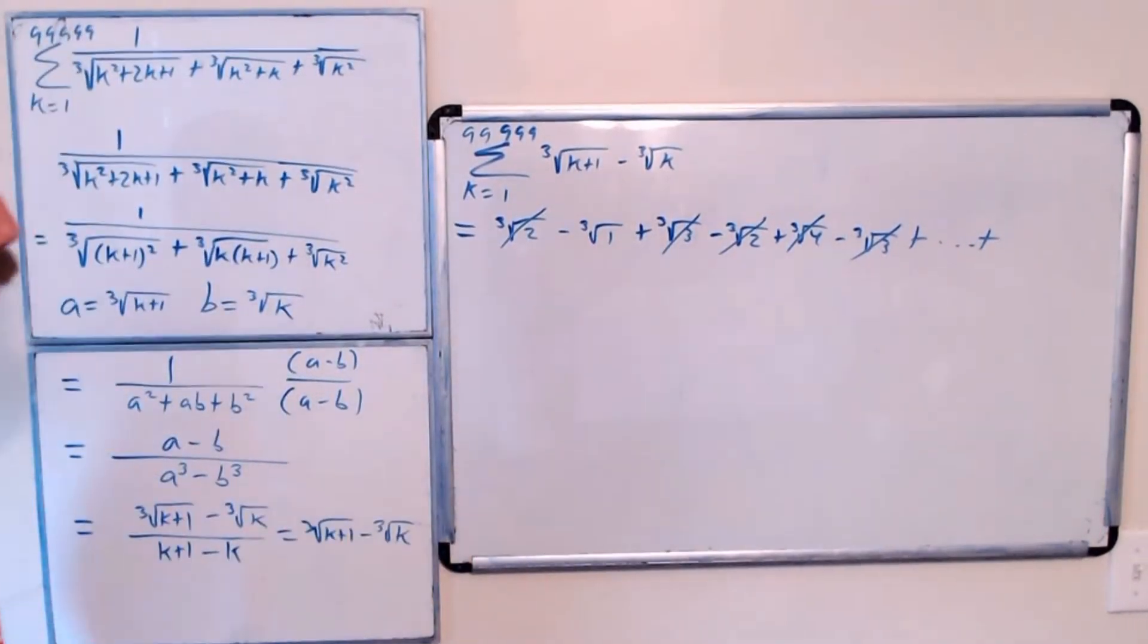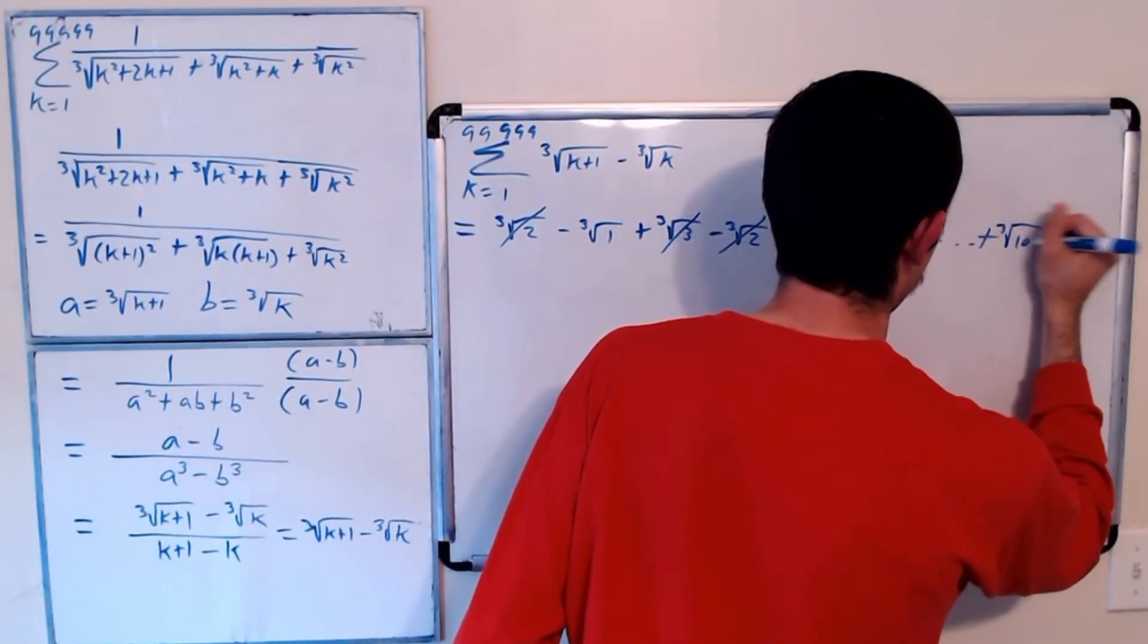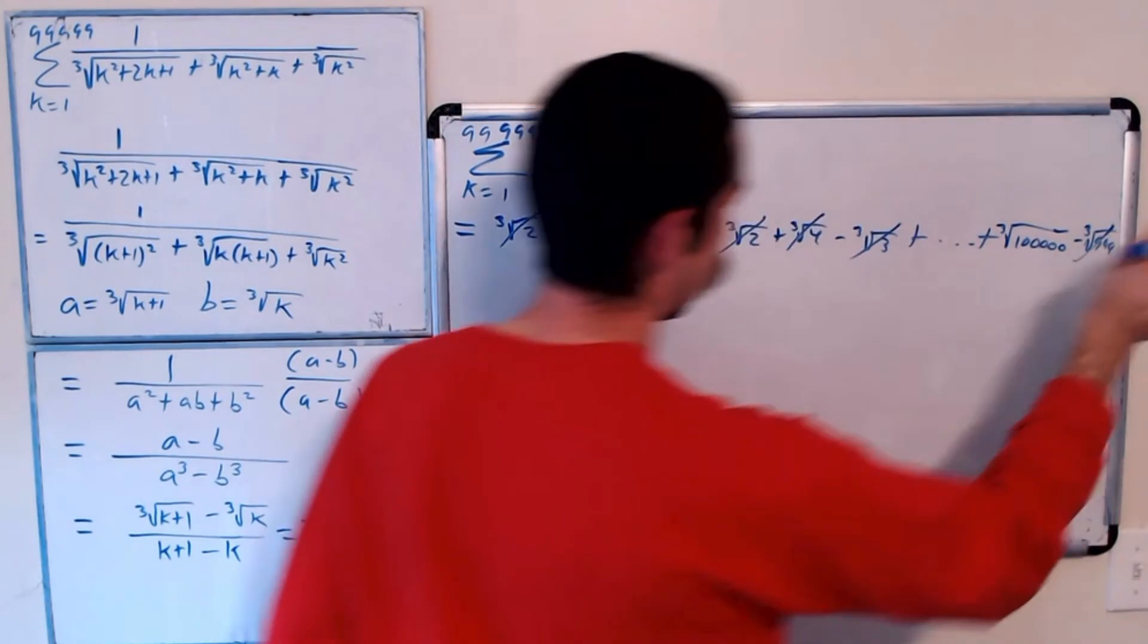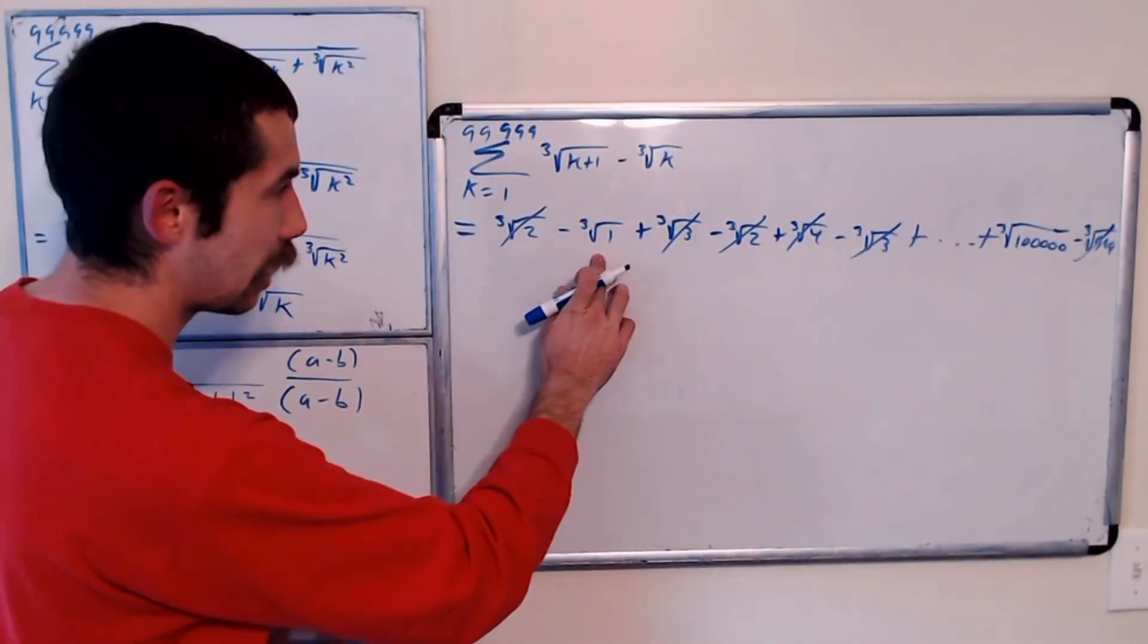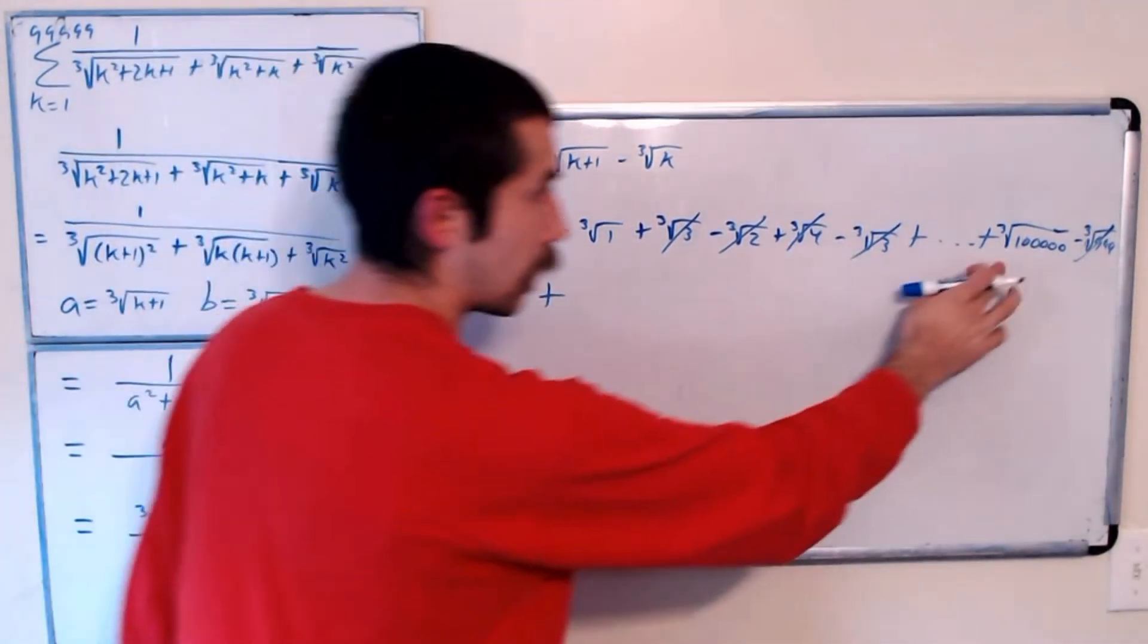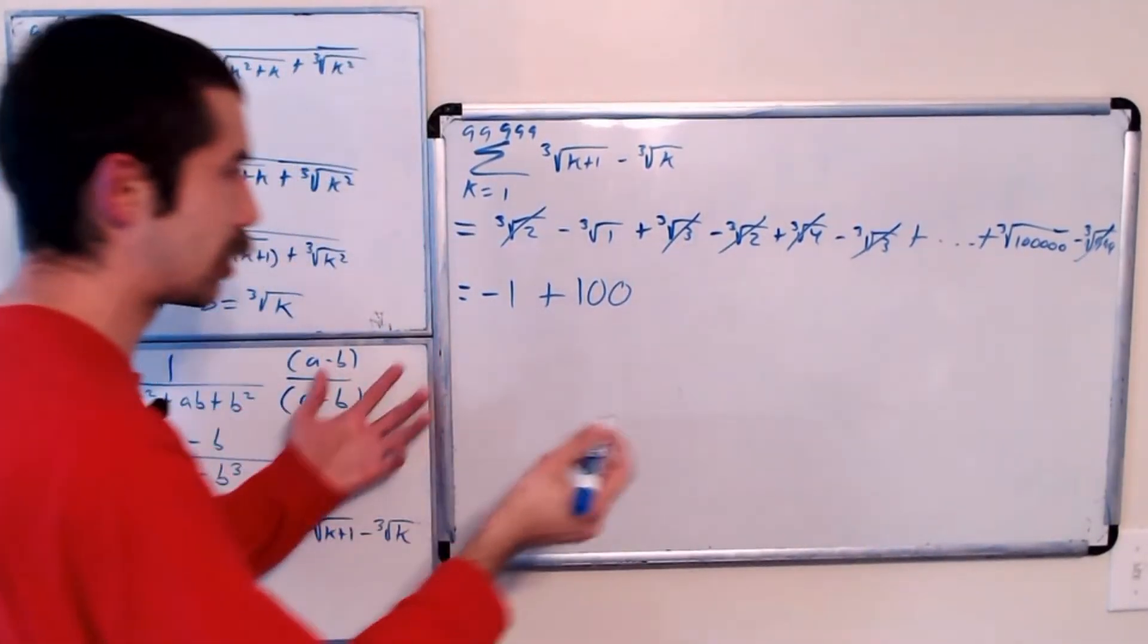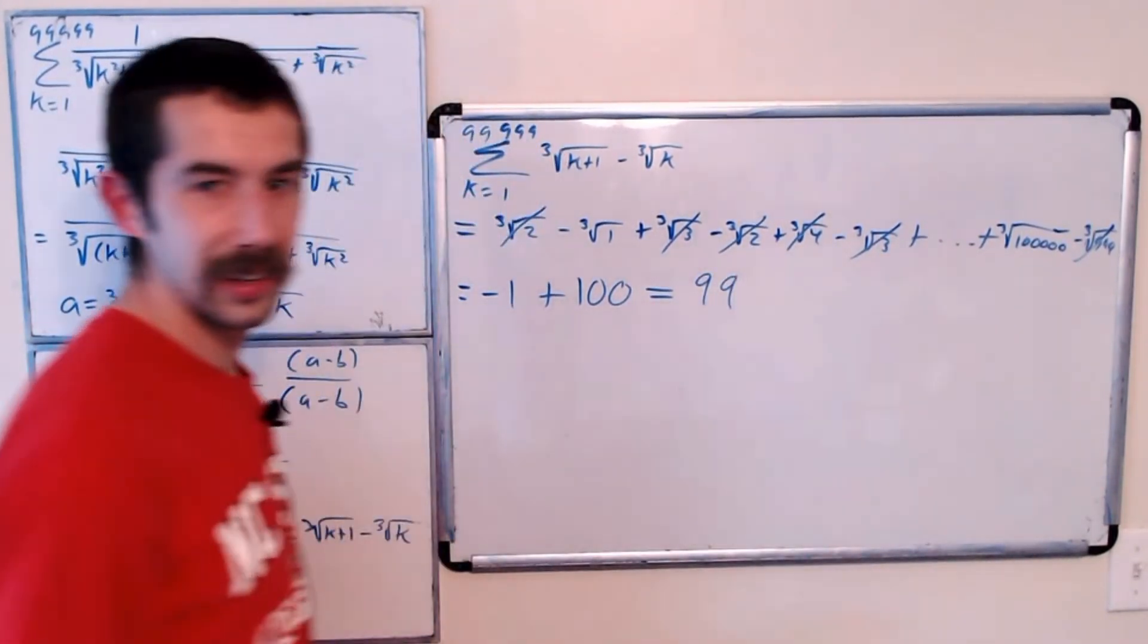The last term would be the cubed root of 100,000 minus the cubed root of all those 9's. It's going to cancel. And so what's left over is negative cubed root of 1, which is negative 1 plus the cubed root of 100,000. What's the cubed root of 100,000? 100. So our series converges to 99.